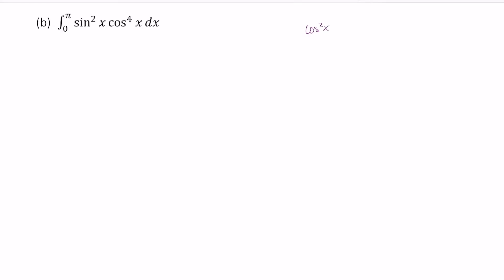Cosine squared x is equal to 1 plus cosine 2x over 2, and sine squared x is equal to 1 minus cosine 2x over 2.